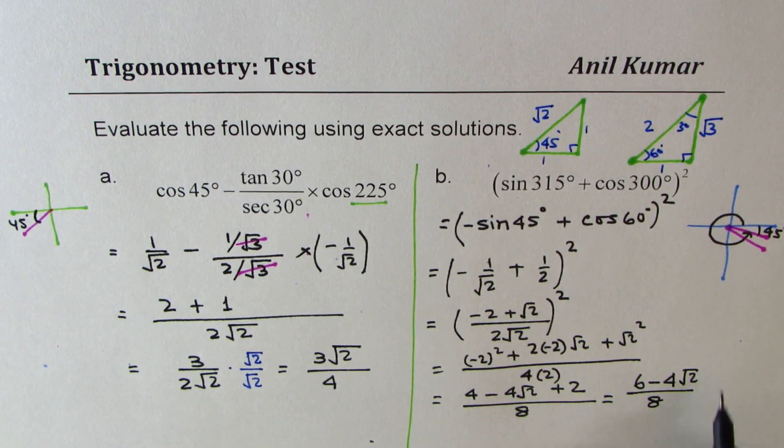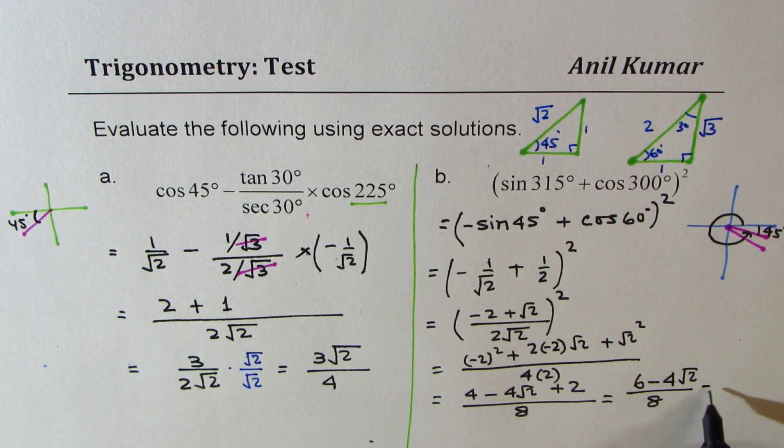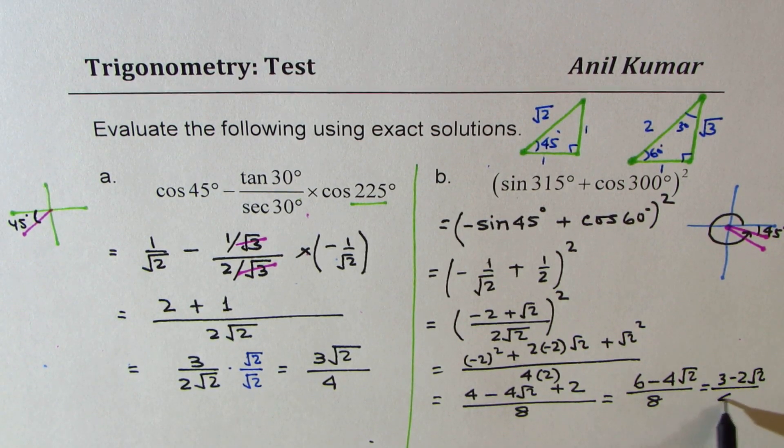Now we can divide all of them by 2. So we get the answer as 3 minus 2 square root 2 over 4.